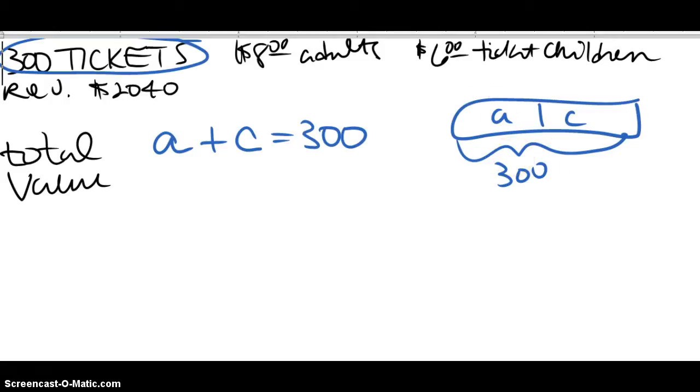All right, the value equation is dealing with the value of those tickets, and that deals with money. So the adult tickets cost $8 each. If I only sell 10 adult tickets, that'd be $80. If I sell 100, that'd be $800. And the children's tickets are $6 each. And the dot's optional, it means multiply. And the total value of all that sales is right there.